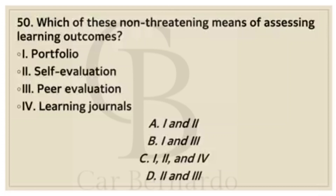Number fifty: Which of these are non-threatening means of assessing learning outcomes? Number 1: Portfolio. Number 2: Self-evaluation. Number 3: Peer evaluation. Number 4: Learning journals. Letter A: 1 and 2. Letter B: 1 and 3. Letter C: 1, 2 and 4. Letter D: 2 and 3. Answer: Letter A, 1 and 2.